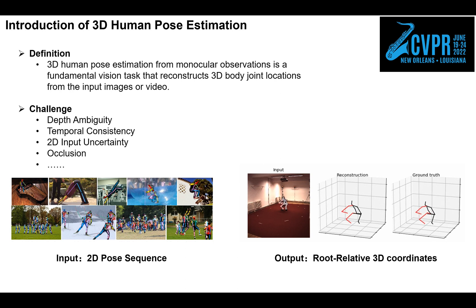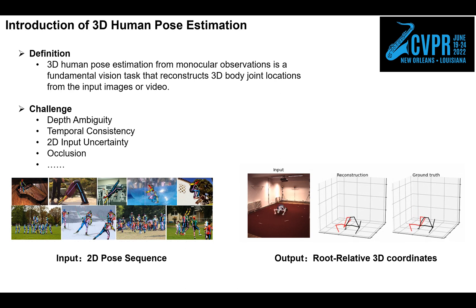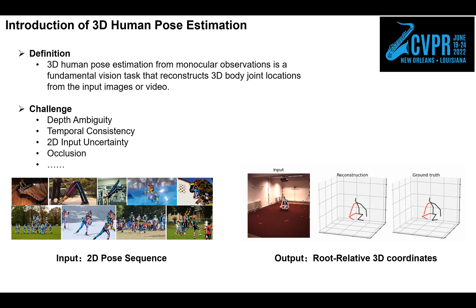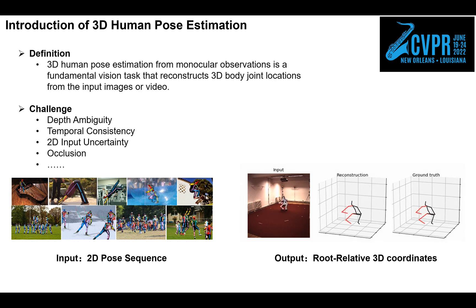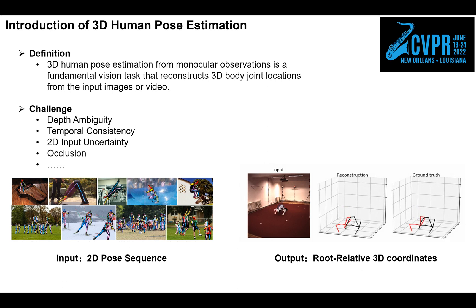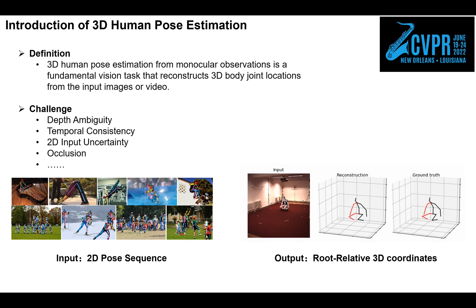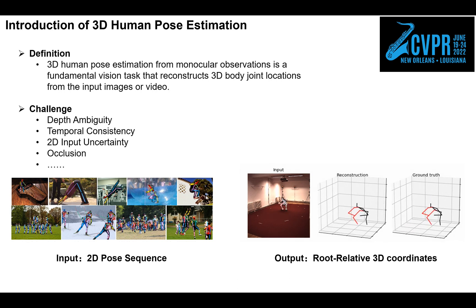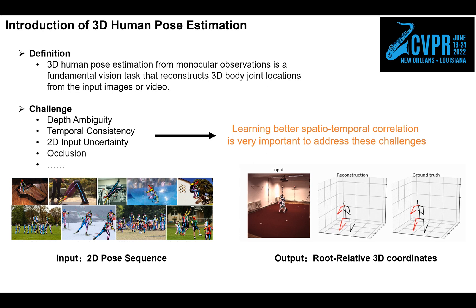The definition of our task is to reconstruct 3D body joint locations from the input images or video. Because of estimating from monocular observations, there are many challenges — the main problem is depth ambiguity. For video pose estimation from 2D keypoints, temporal consistency and input uncertainty are also severe issues. So learning better spatio-temporal correlation is very important to address these challenges.